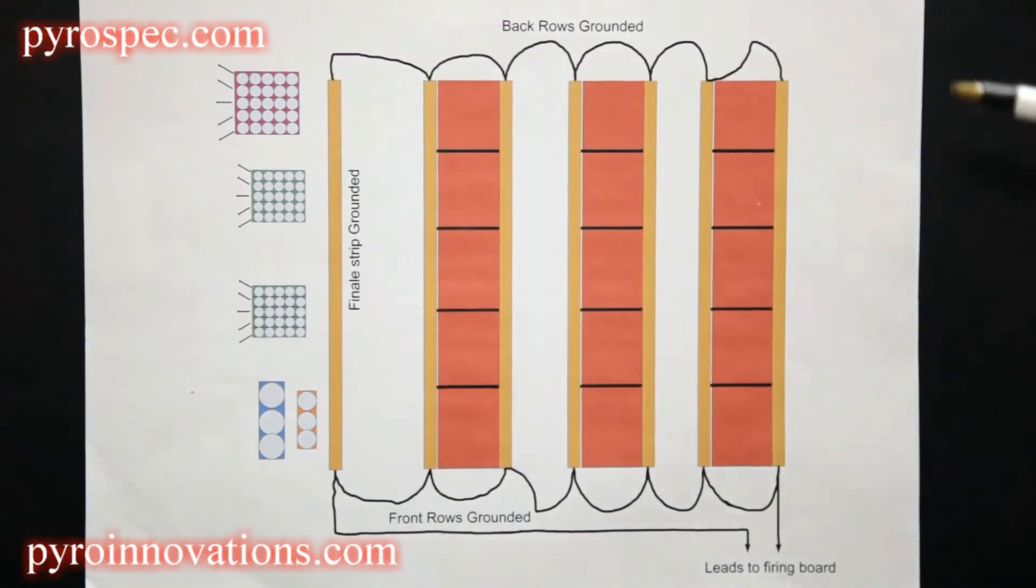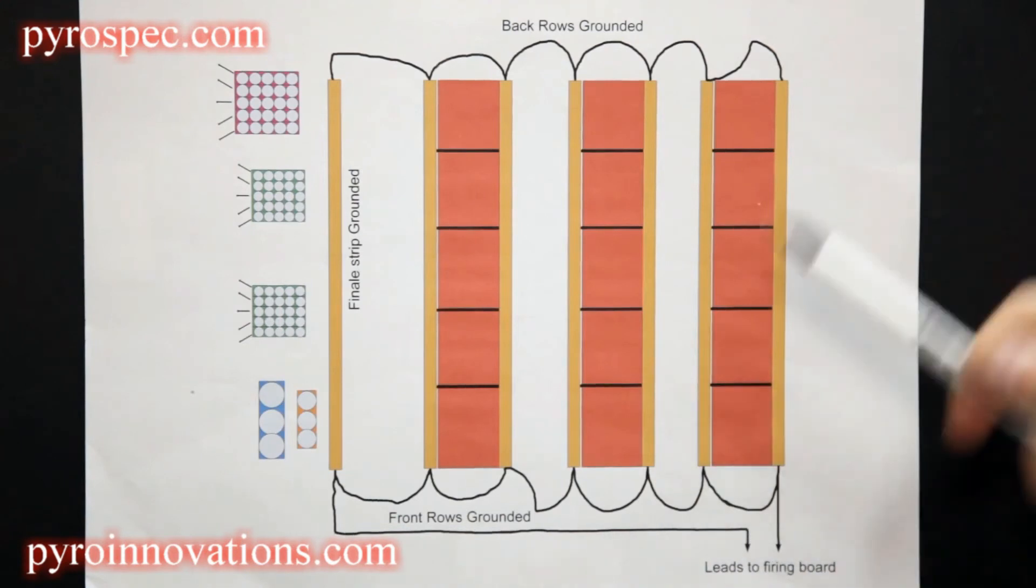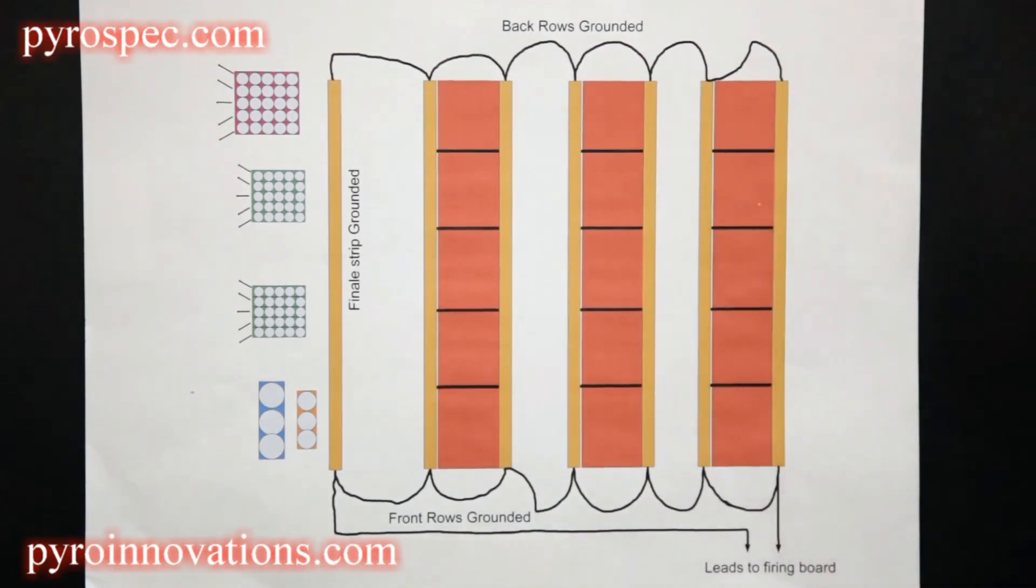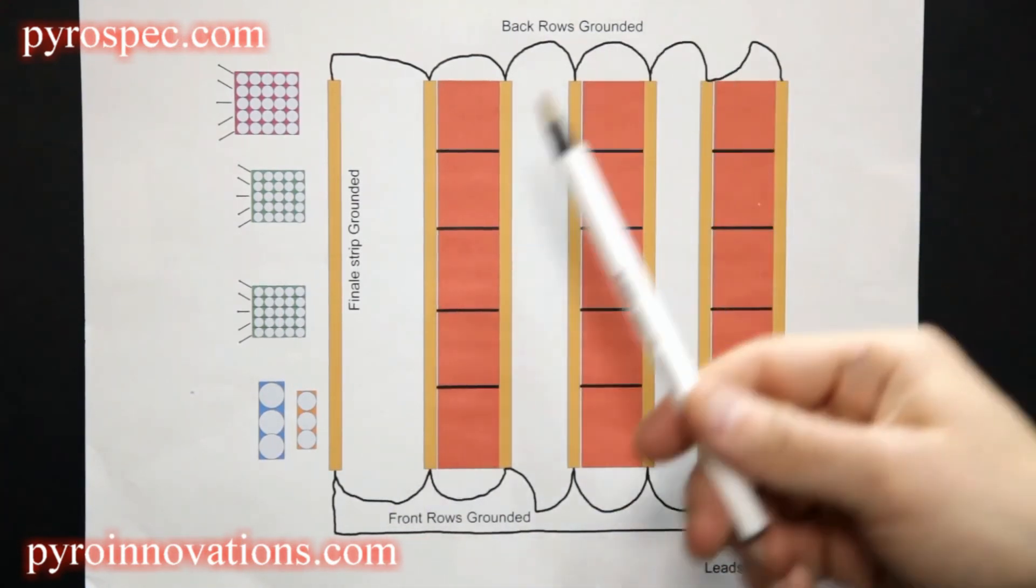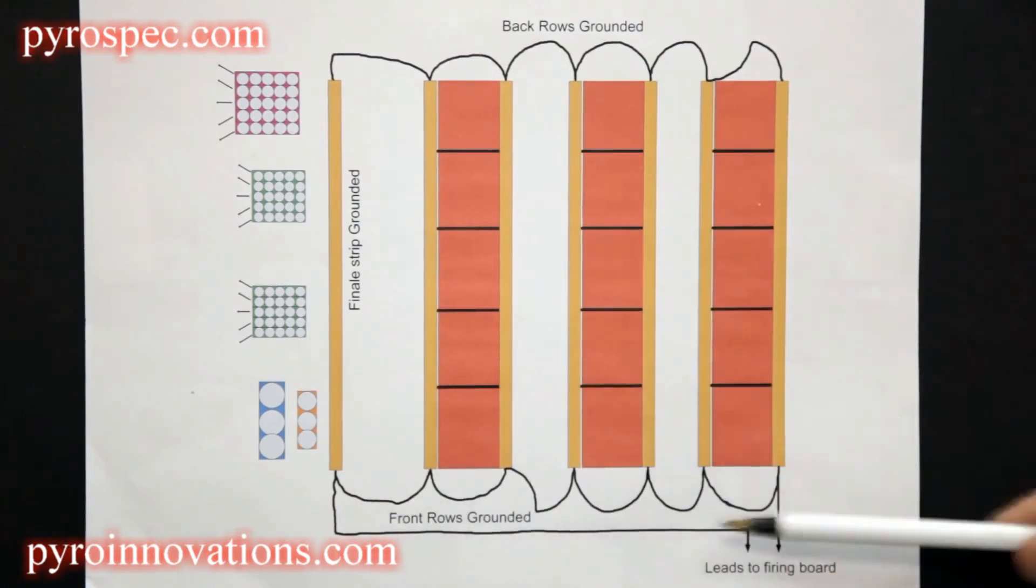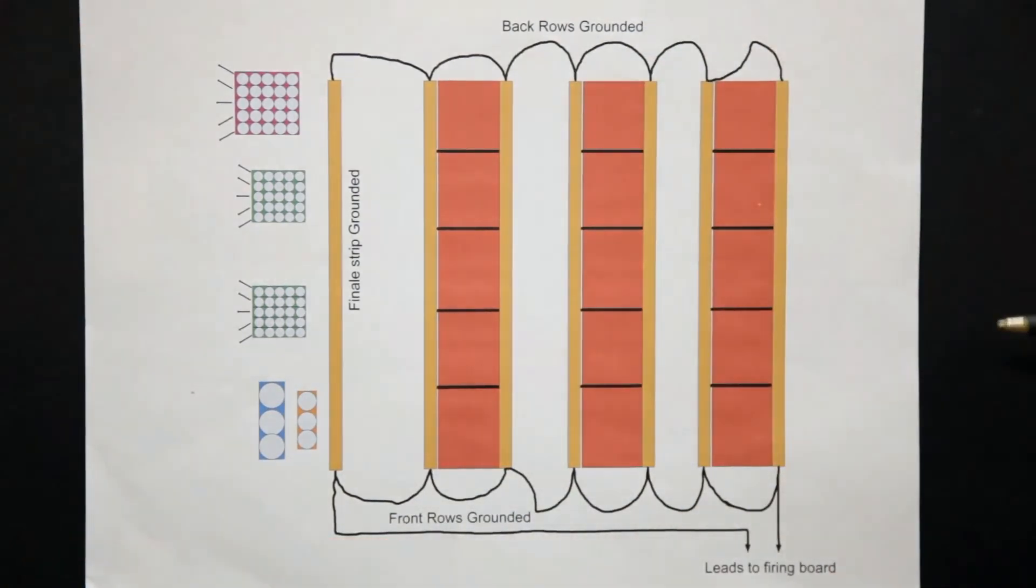This is probably the most important aspect of an electrical firing setup, being that if you lose your ground you can lose your entire show or, in the best case scenario, an entire strip. So it's very important to have very redundant grounding.